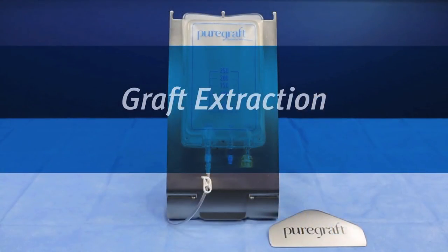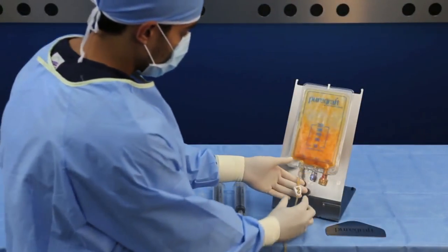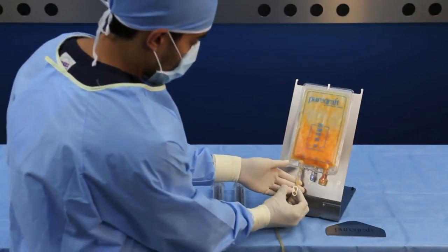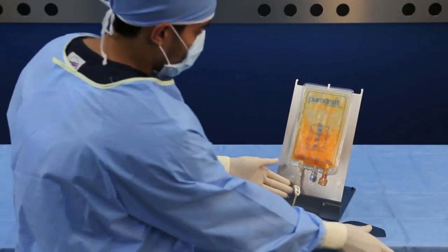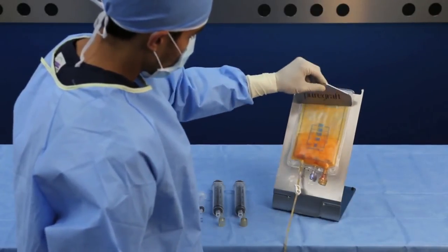Once the graft is washed, close the clamp to the waste bag. Then use the PureGraft slider to guide the graft towards the tissue port for graft extraction.